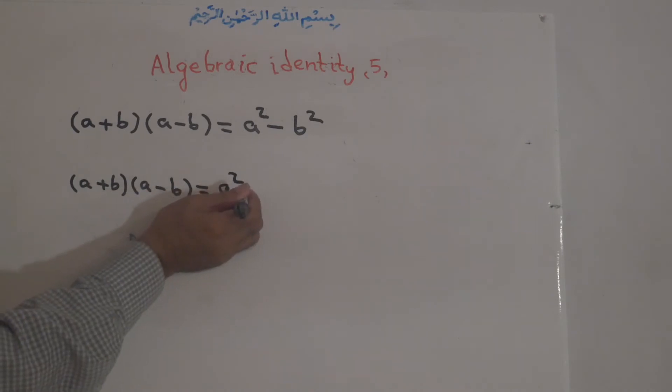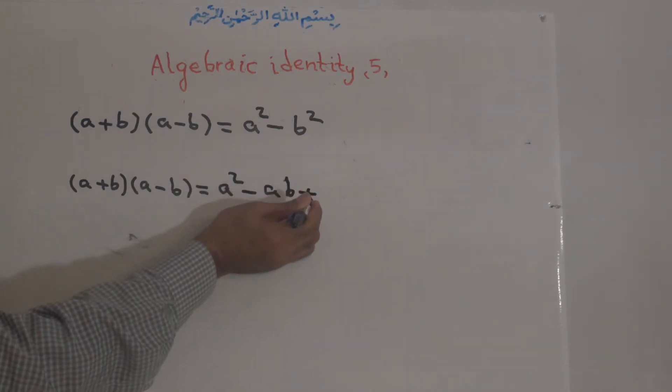Positive times negative is negative, A times B is AB. Positive times positive is positive, A times B is AB.